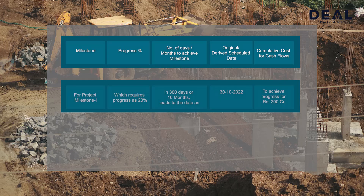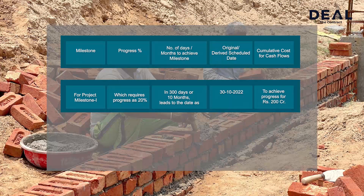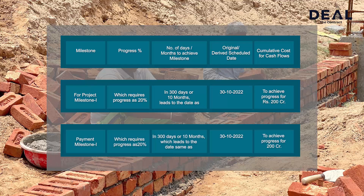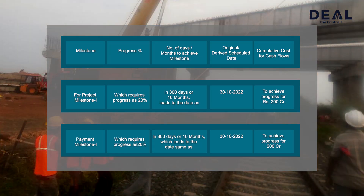For Project Milestone 1, which requires 20% progress in 300 days or 10 months, the date is 30th October 2022 to achieve progress worth Rs. 200 crore. Payment Milestone 1 also requires 20% progress and similarly leads to the date of 30th October 2022 to achieve the same progress of Rs. 200 crore.